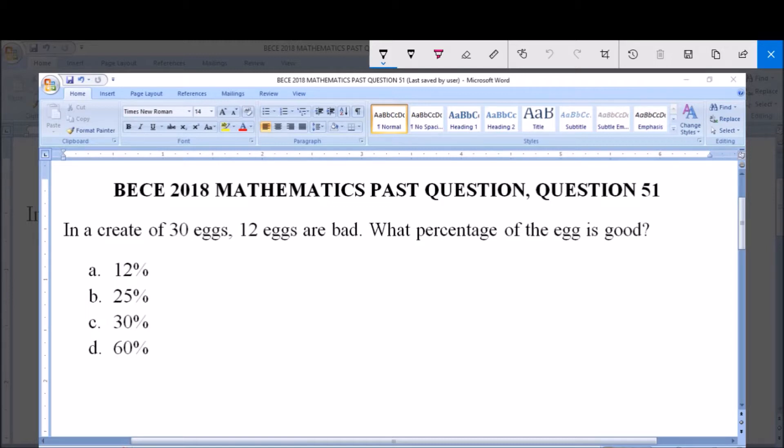In a crate of 30 eggs, 12 eggs are bad. What percentage of the eggs is good? A 12%, B 25%, C 30%, and D 60%.